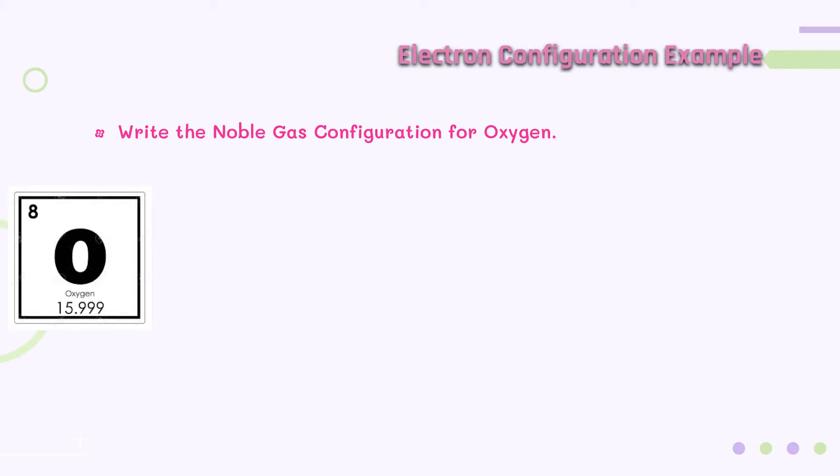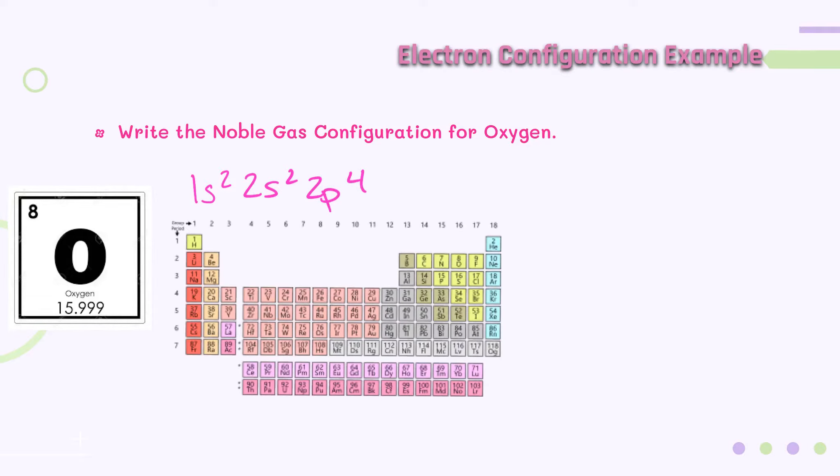So let's try another example. You'll remember this example from the previous lesson. If we look at the periodic table, oxygen is right here. The noble gas that is in the row directly above it is helium. So we write helium in our brackets.